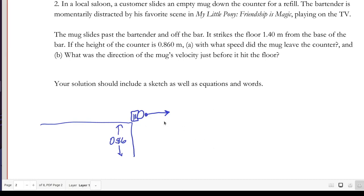If the mug, if the height of the counter is 0.86 meters, with what speed did the mug leave the counter if it strikes 1.4 meters away from the base of the bar? So we're given the location, how far this thing travels, and we want to know the initial speed.